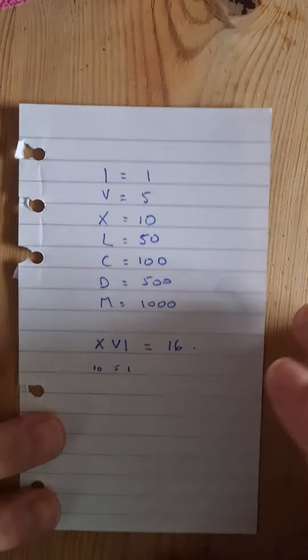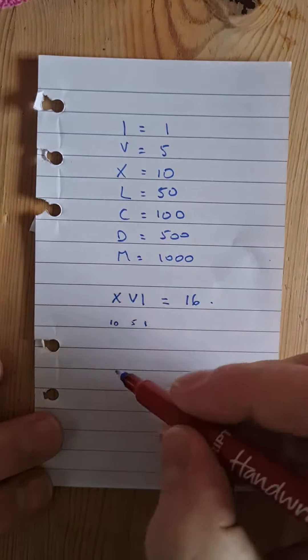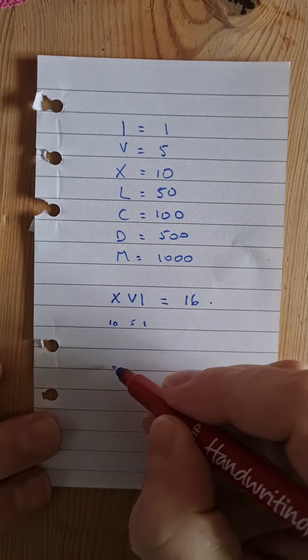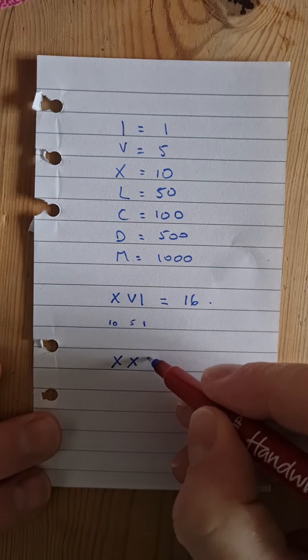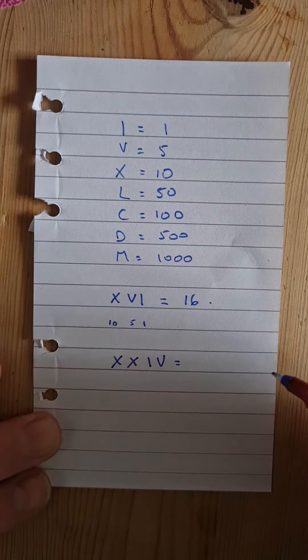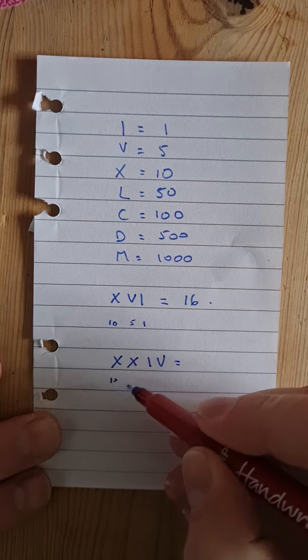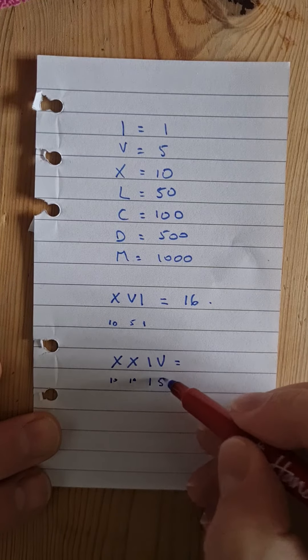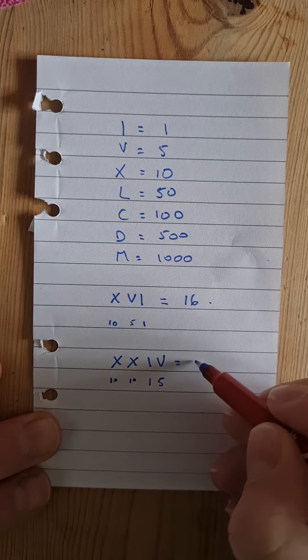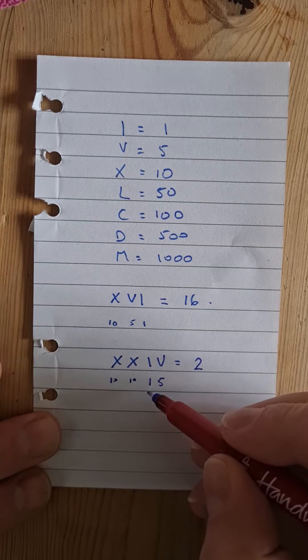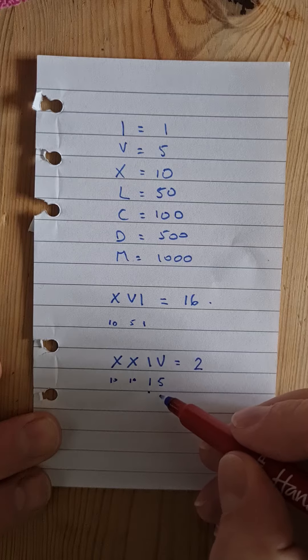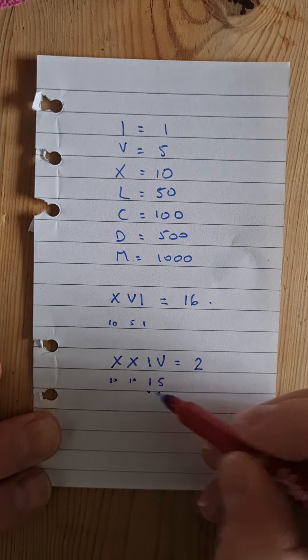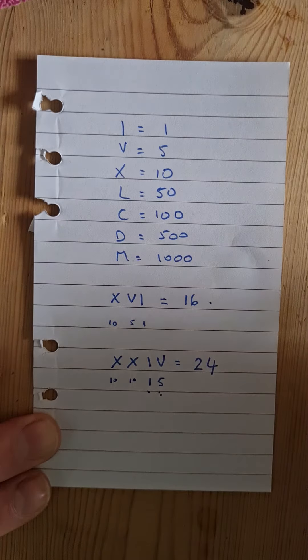But if we have numbers which are slightly different and they get smaller. So for example, if we have X, X, IV, then X is 10, 10 again. Then we've got 1 and 5. So we've got two large numbers there. We've got 10 and 10 which is 20. But then we've got a small value before a large one. So that means one less than five. So that one would be four. So that number would be 24.